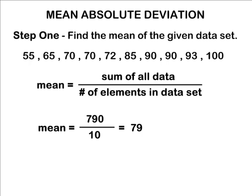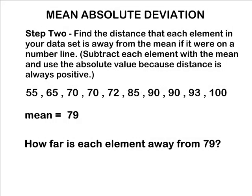After you have figured out what the mean score of your data set is, you have to find the distance that each element in your data set is away from the mean if it were on a number line. So basically, you are going to subtract each element with the mean and use the absolute value because distance is always positive.